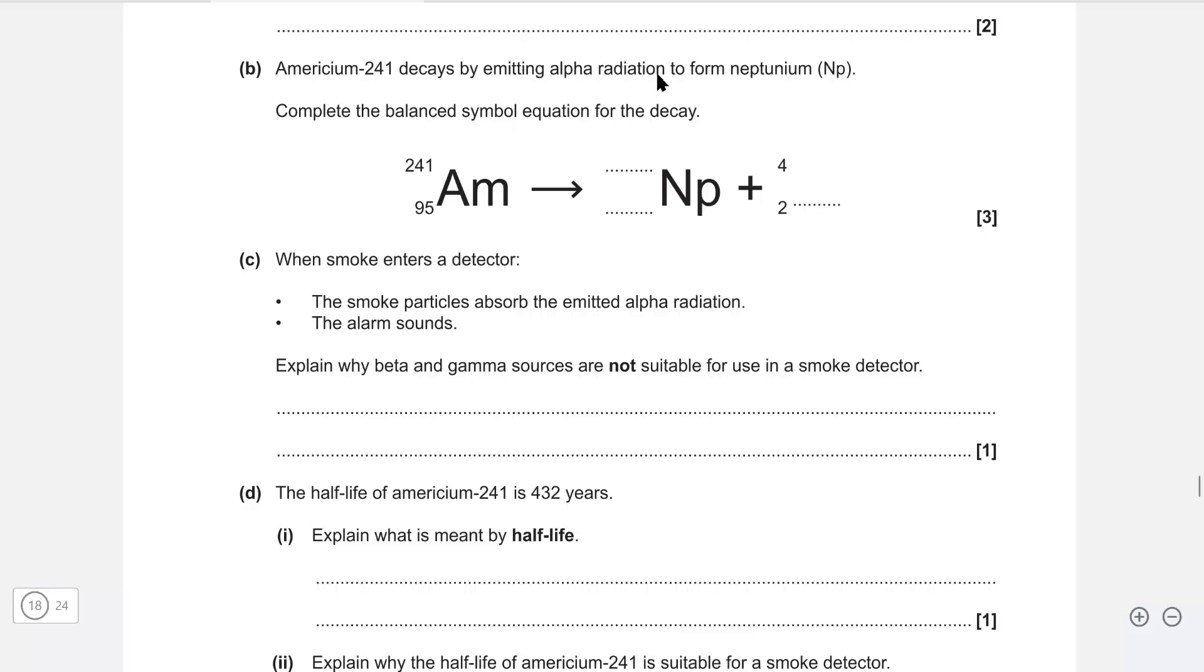We have the decay by emitting an alpha particle to form neptunium. Complete the balanced equation. The symbol for an alpha particle is typically just helium. All we need to do is balance these out. Let's start with the proton number. We have 95 on the left, so these two will have to add up to 95. Something plus 2 equals 95, that something is 93. Same here, 241 will be something plus 4, so this something will equal 237.